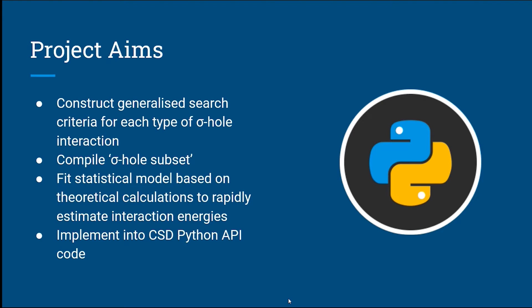The aims of my project: I'm aiming to create a generalized search criteria for each type of sigma-hole interaction — a geometric criteria covering distances and angles — with the aim of creating a subset of the CSD containing these sigma-hole interactions. Then I'm going to create a statistical model based on computational calculation of distances to neighbors, building on work my group has done on a simple model for halogen bonding — optimizing parameters to rapidly estimate these interactions.